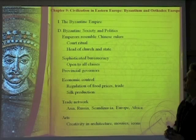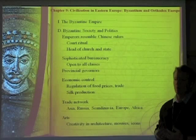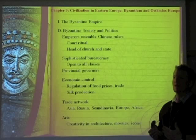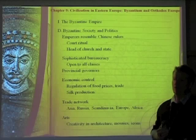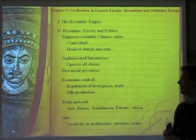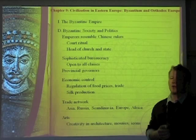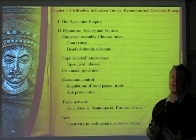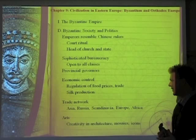Byzantine society and politics: The emperor resembles Chinese rulers, with a divine essence where God has appointed them — similar to the 'son of heaven' concept. The bureaucracy is similarly sophisticated, with multiple levels, schooling, examinations, and being open to all classes. Economic control through regulation of food prices and trade resembles China's treatment of merchants — merchants are somewhat lower in status here as well, since the government controls commerce, limiting their social status despite potential wealth.